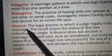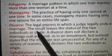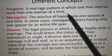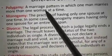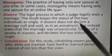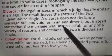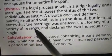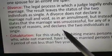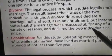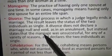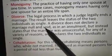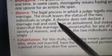The third important event after marriage is divorce. Divorce is the legal process in which a judge legally ends a marriage. The result leaves the status of the two individuals as single. A divorce does not declare a marriage null and void as in an annulment, but instead states that the marriage was unsuccessful for any one of a variety of reasons and declares the two individuals as single. In developed societies, divorce is a normal phenomenon, and in India also, in urban society, divorce is now a common phenomenon.